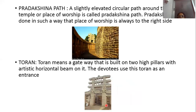The third part is Pradakshinapatha. When we go to a temple, we take rounds in odd numbers — one, three, five, seven — to fulfill our wishes. That path is called Pradakshinapatha. A slightly elevated circular path around the temple where the place of worship is always to the right side is called Pradakshinapatha.